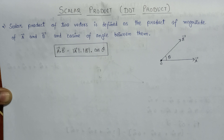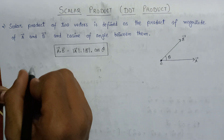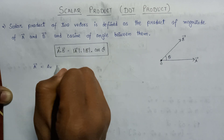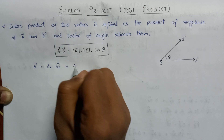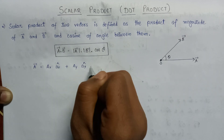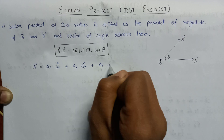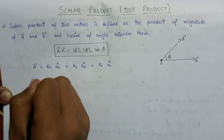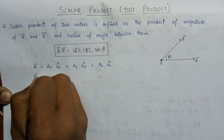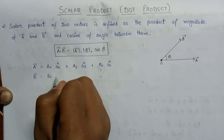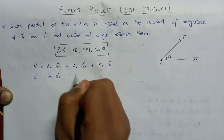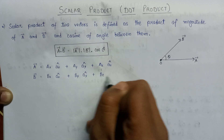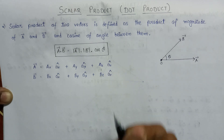Vector A can be given as: A vector equals Ax times x-cap plus Ay times y-cap plus Az times z-cap. Similarly, the vector representation for B vector is given as: Bx times x-cap plus By times y-cap plus Bz times z-cap.